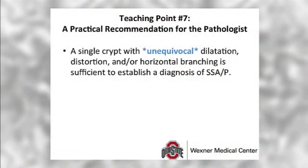Similarly, in your opinion, what is the one new recommendation pathologists should be aware of? According to the recent expert opinions, a single crypt with unequivocal dilatation, distortion, and/or horizontal branching is sufficient to establish a diagnosis of SSA/P. These newest surveillance guidelines speak to the recognized malignant potential of particular serrated polyps. Hopefully, these will simplify the diagnostic process and ultimately lead to a decreased incidence of right-sided colorectal carcinomas.